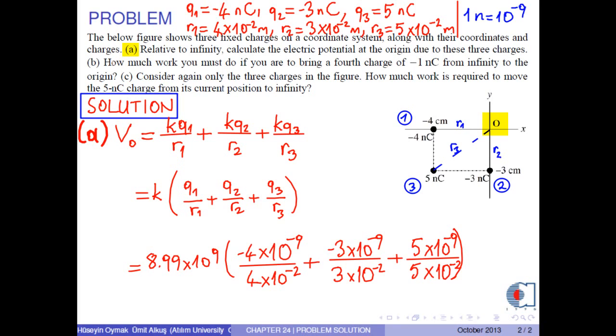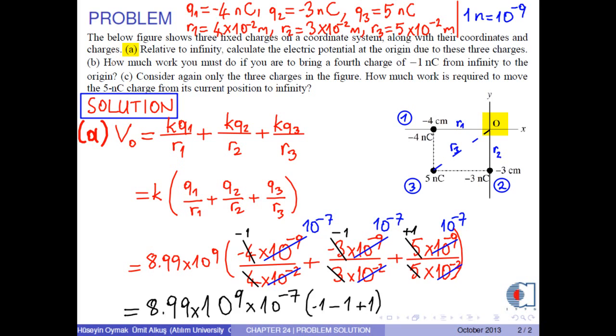In all terms, we have 10 to negative 9 over 10 to negative 2, which gives 10 to negative 7. And negative 4 over 4 is negative 1, negative 3 over 3 is negative 1, and 5 over 5 is positive 1. Now, we can take 10 to negative 7 outside the parentheses. In the parentheses, we are left with negative 1. As a result, we obtain the electric potential at the origin due to these three charges as negative 8.99 times 10 to 2 volts.